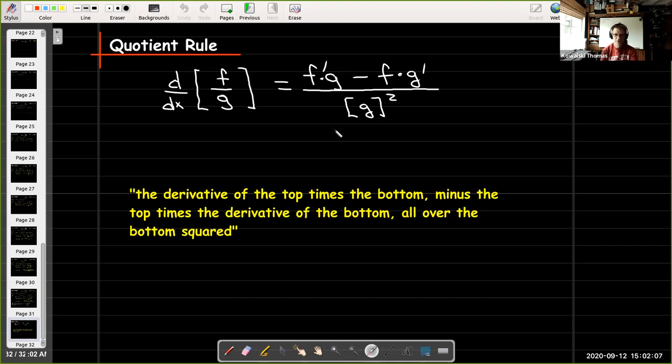The other thing that we should note is that in the denominator, we have no derivatives at all. We just have g². No primes, no derivatives in the denominator.